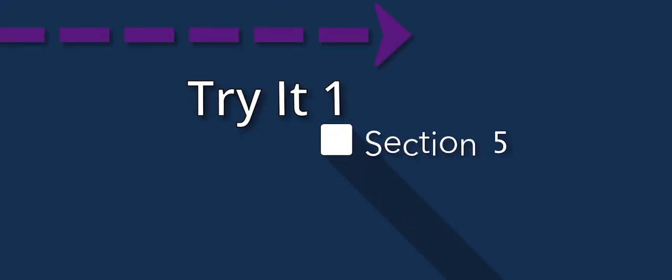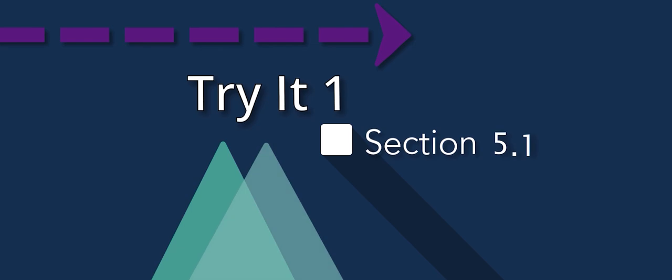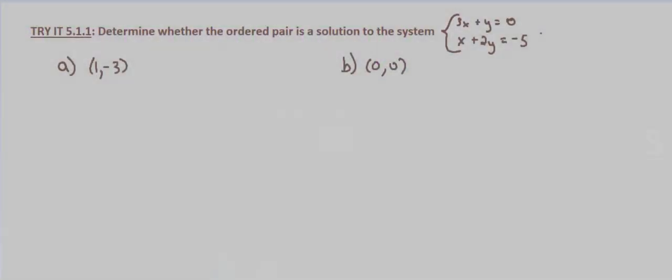In this problem we're looking at a system of equations and we're asked to determine whether certain ordered pairs are a solution to the system of equations. This process is pretty much the same as when we were just looking at equations. The difference is it has to satisfy both equations now. So we have to check the point that we're given in both equations.